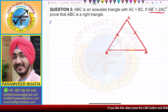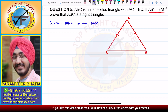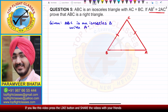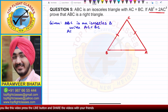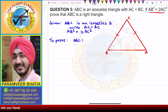Given: ABC is an isosceles triangle with AC equal to BC. And also, we have been given that AB square is equal to 2AC square. We have to prove that ABC is a right triangle.